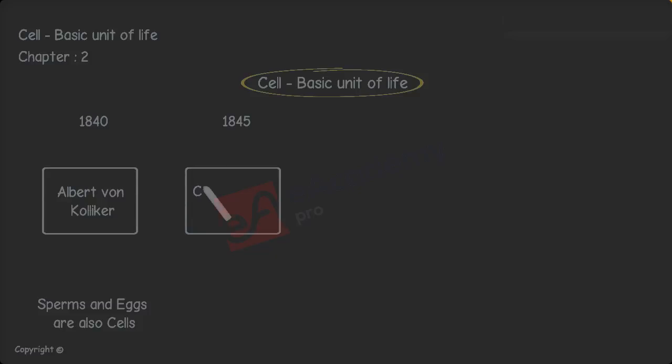In 1840, Albert von Kölliker realized that sperms and eggs are also cells. In 1845, Carl Heinrich Braun found that cell is the basic unit of life.